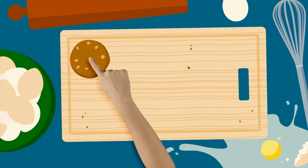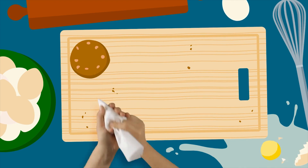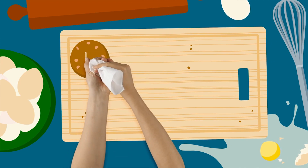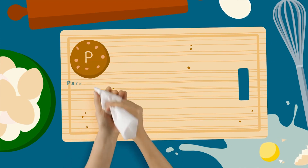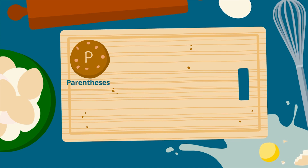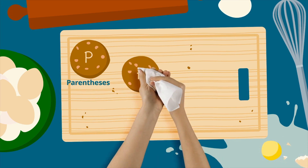The first step in the Order of Operations is P, for parentheses. All expressions inside the parentheses should be evaluated first.